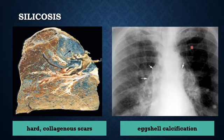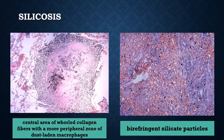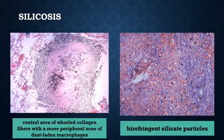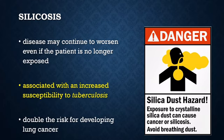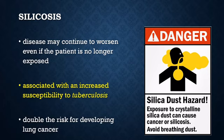Calcification occurs in the lymph nodes and is seen radiographically as eggshell calcification. Histologic examination reveals the hallmark lesion characterized by a central area of whorled collagen fibers with a more peripheral zone of dust-laden macrophages. Examination of the nodules by polarized microscopy reveals birefringent silicate particles; the silica is weakly birefringent. It should be remembered that in silicosis, the disease may continue to worsen even if the patient is no longer exposed. Silicosis is associated with an increased susceptibility to tuberculosis, possibly because crystalline silica inhibits the ability of pulmonary macrophages to kill phagocytosed mycobacteria. Additionally, patients with silicosis have double the risk of developing lung cancer.